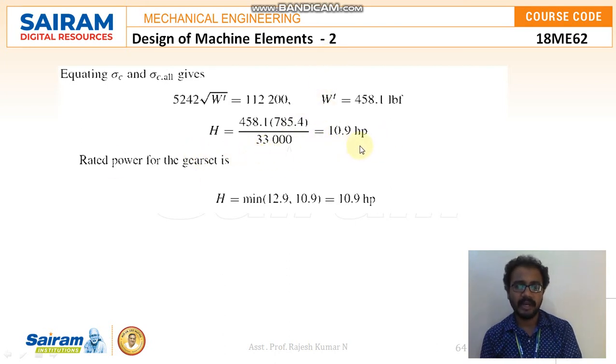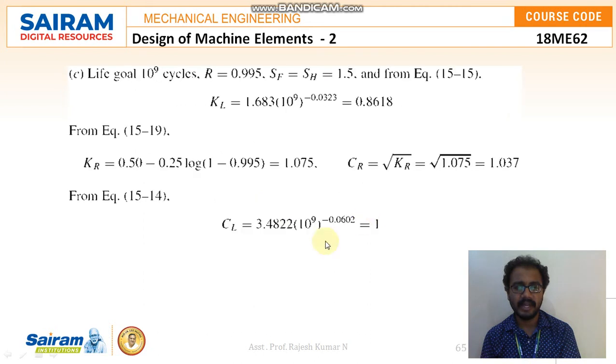Here power value, you can see horsepower I am writing, not in terms of kilowatts. Since all the values WT, LBF, PSI, all those things I am substituting, H value I will be getting in terms of horsepower. So the rated power for the gear set is H is equal to minimum of 12.9 to 10.9. So I will be going with 10.9 HP.